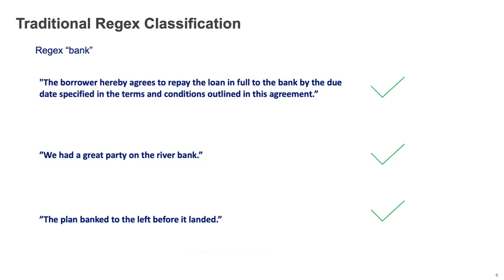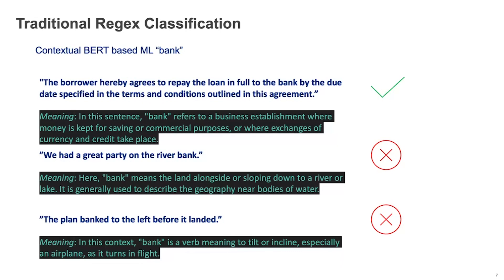Now, with our new ML-based classification, we understand the context. In the very first sentence, we understand 'bank' refers to a business establishment used for saving money or commercial purposes. In the second example, 'bank' means the land along a river. In the third example, 'bank' means inclining or tilting. So from a full context perspective, the first sentence will get classified as a financial document, but sentences two and three will not. By using machine learning, we provide greater accuracy and also provide visibility instantaneously without requiring predefined policies.